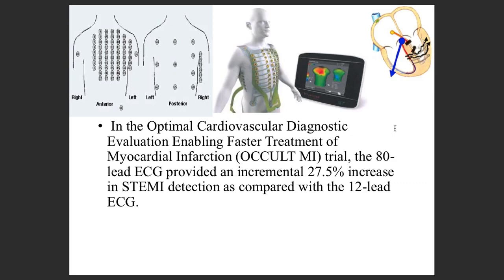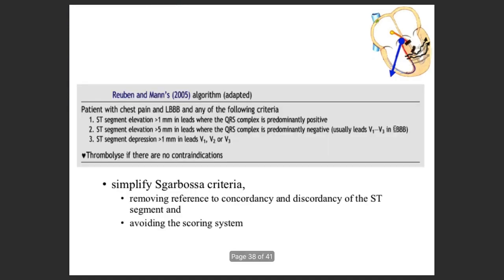Now they have also been trying to see how to make it even better. That is what is called the Occult MI study — Optimal Cardiovascular Diagnostic Evaluation Enabling Faster Treatment of Myocardial Infarction. In that, what they did was they proposed a newer algorithm, what is called the Rubin and Man's algorithm.